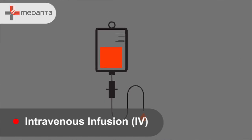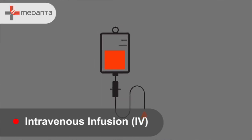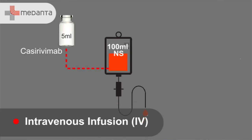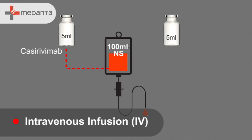The therapy can be given as an intravenous infusion. For intravenous infusion, 5 ml of casirivimab equal to 600 mg and 5 ml of imdevimab equal to 600 mg is put into 100 ml of normal saline.